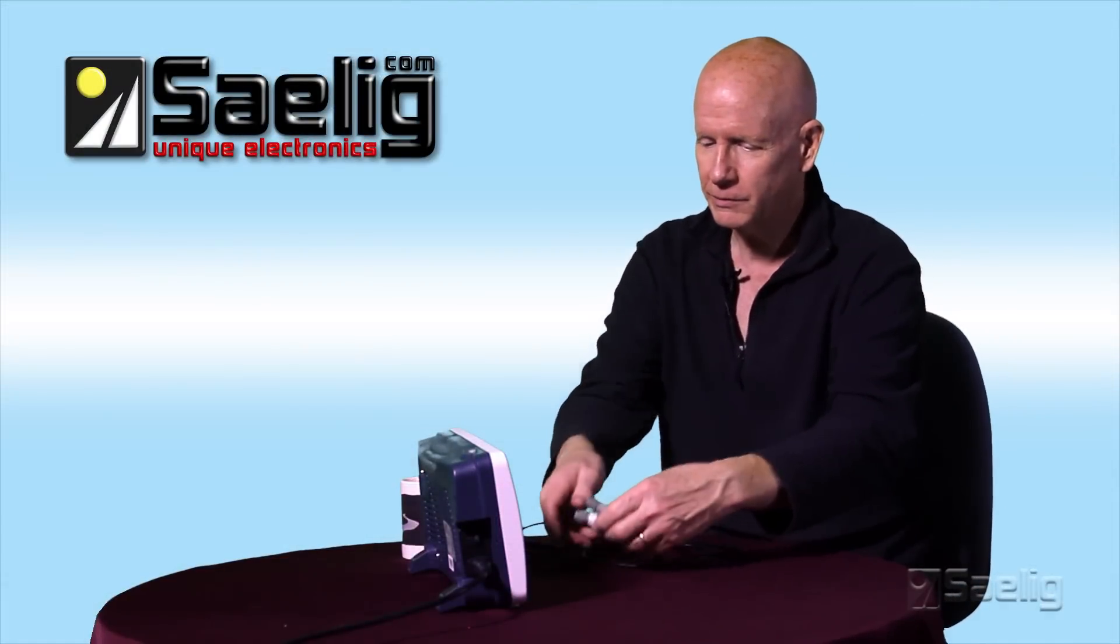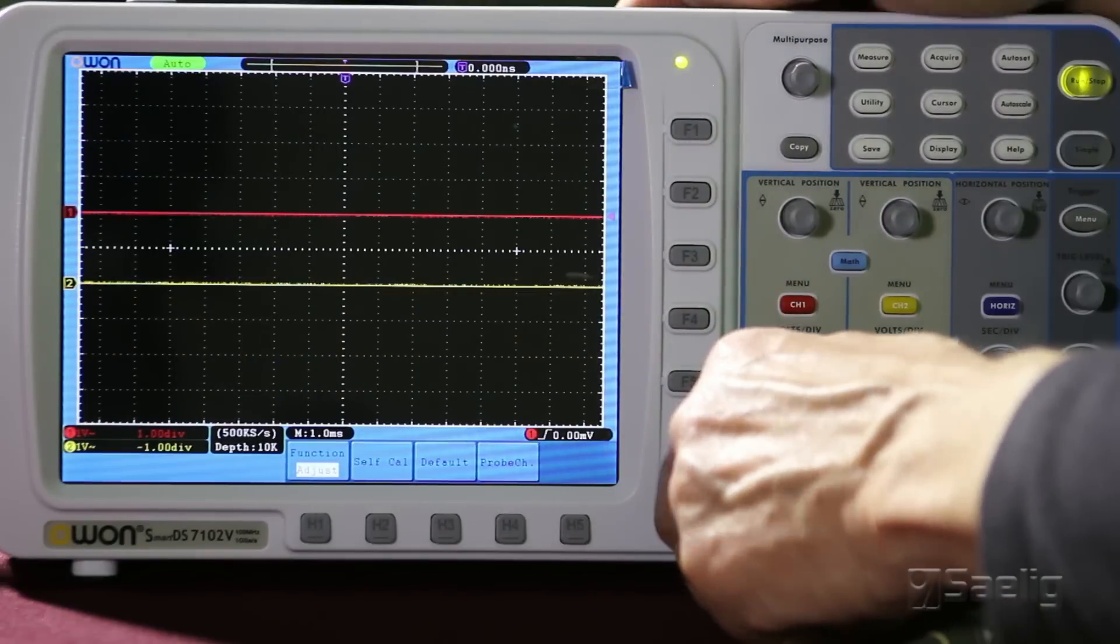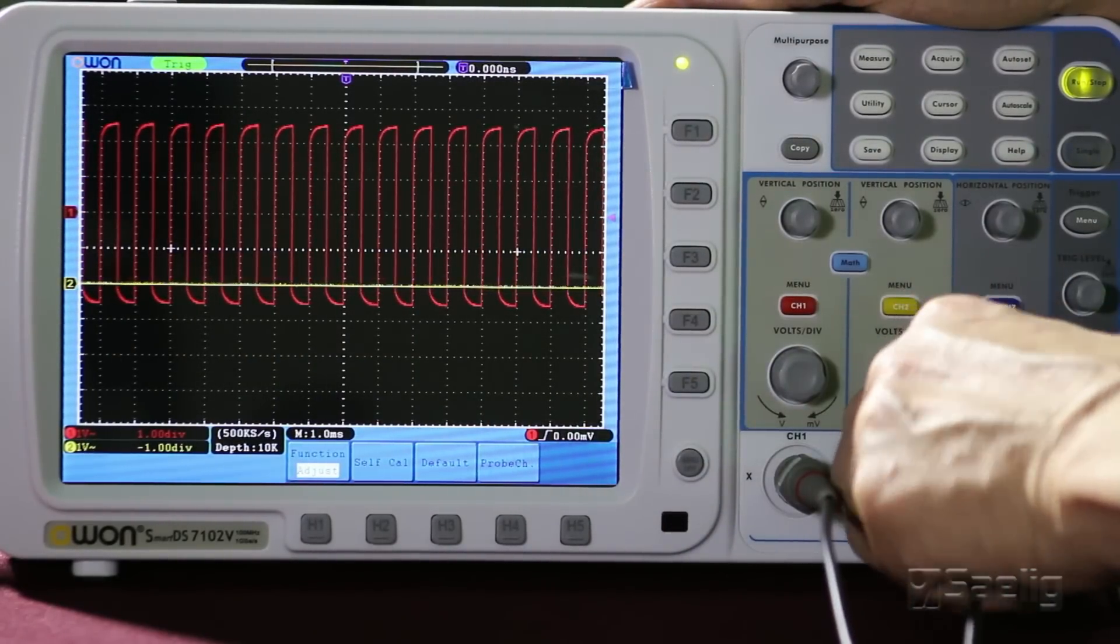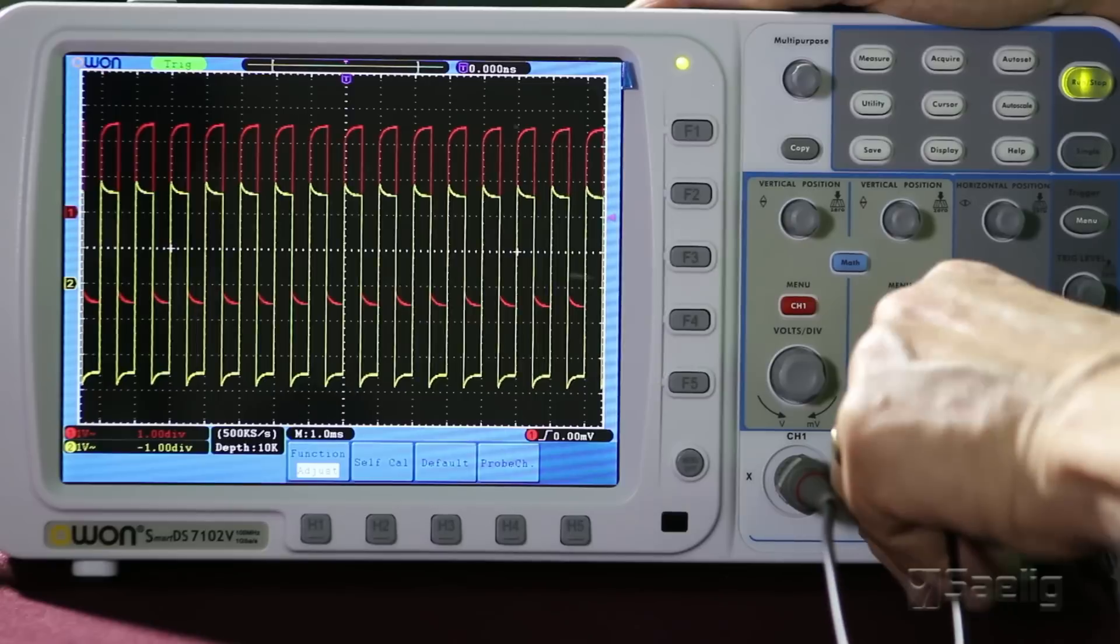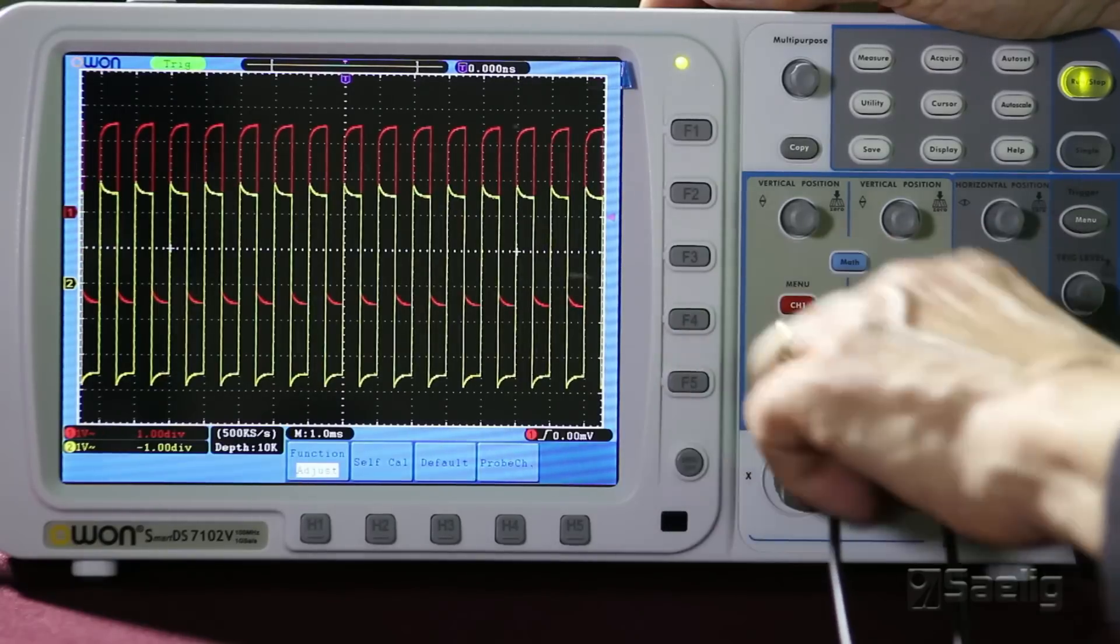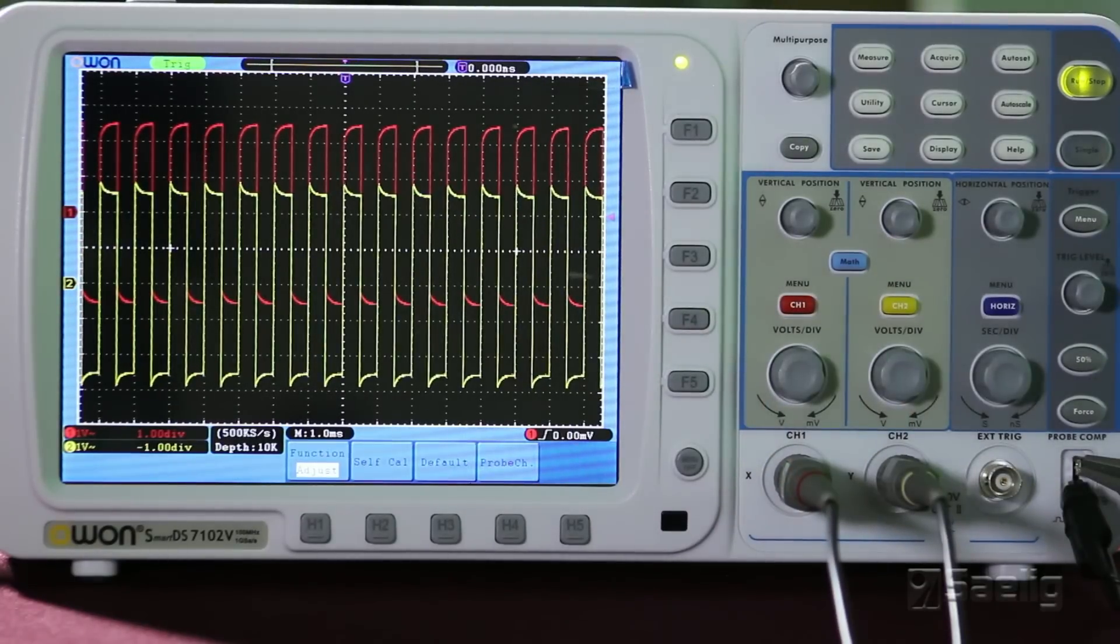So I would have a fairly high level of confidence in this scope. So let's hook up some probes and just see what we get for some signals. We're using the calibrator output right here on the front of the scope, which puts out some kind of a square wave at a certain frequency and a certain voltage, peak to peak level.